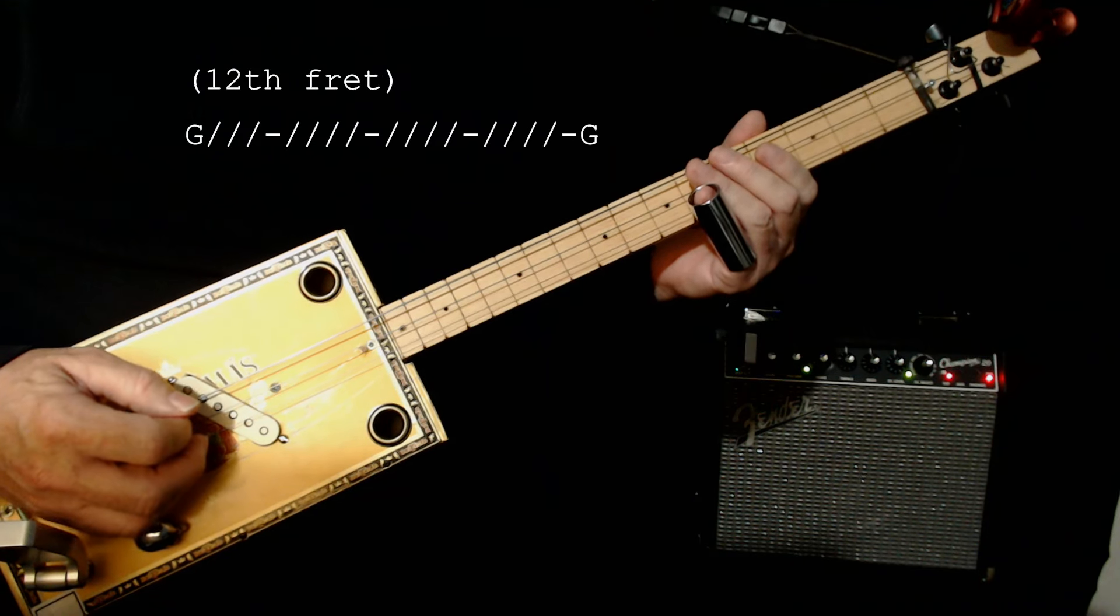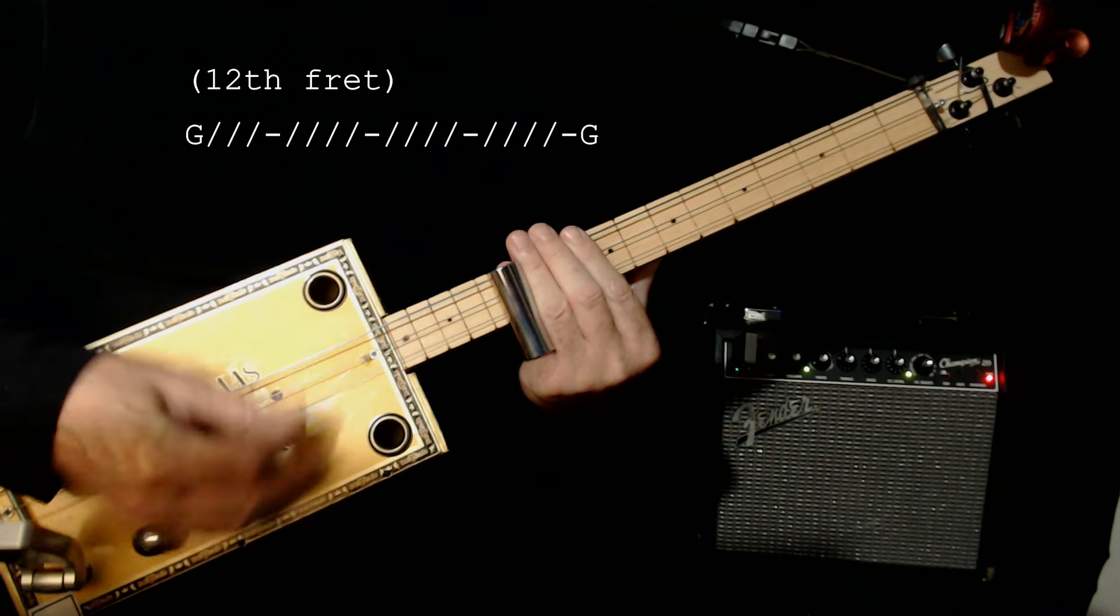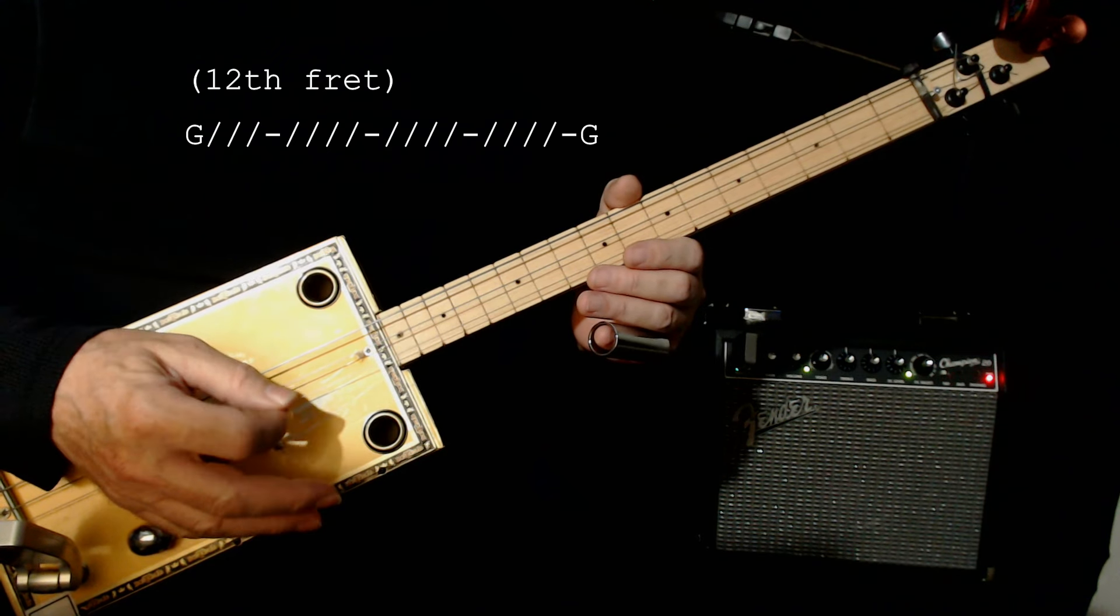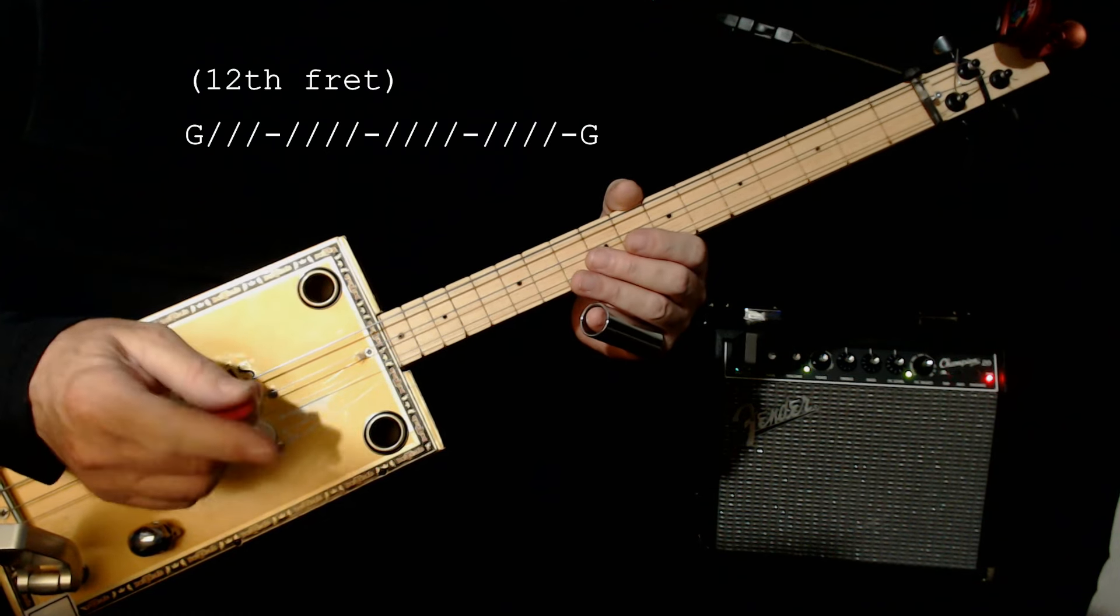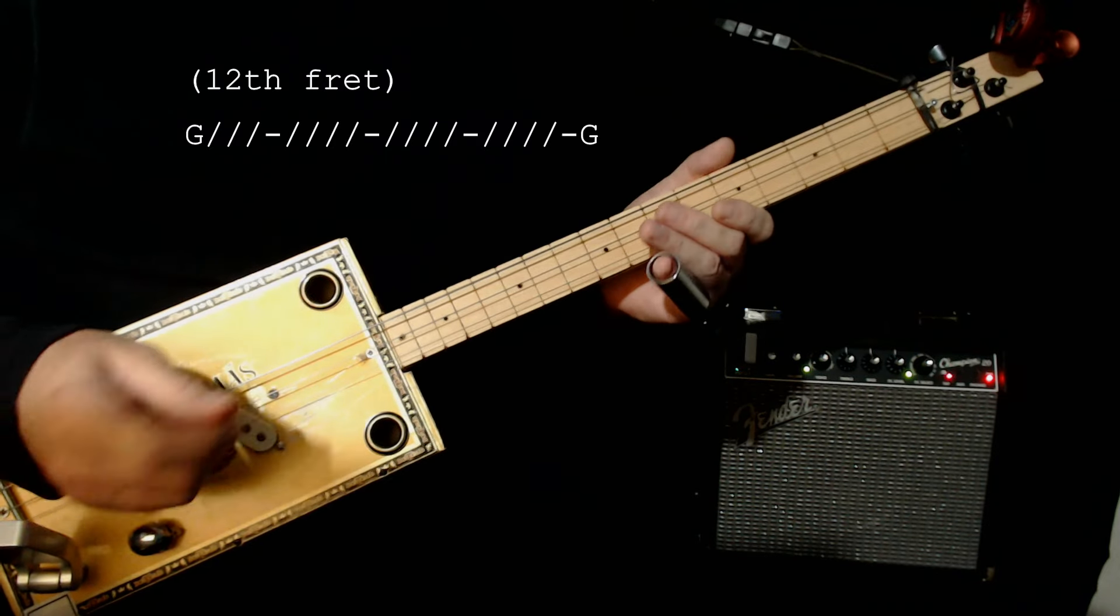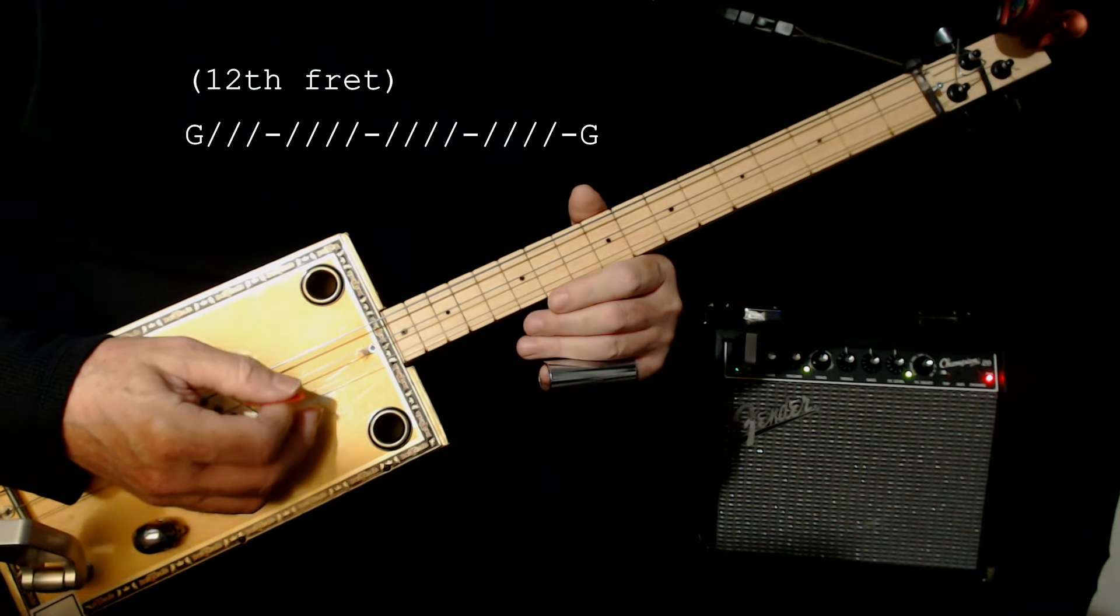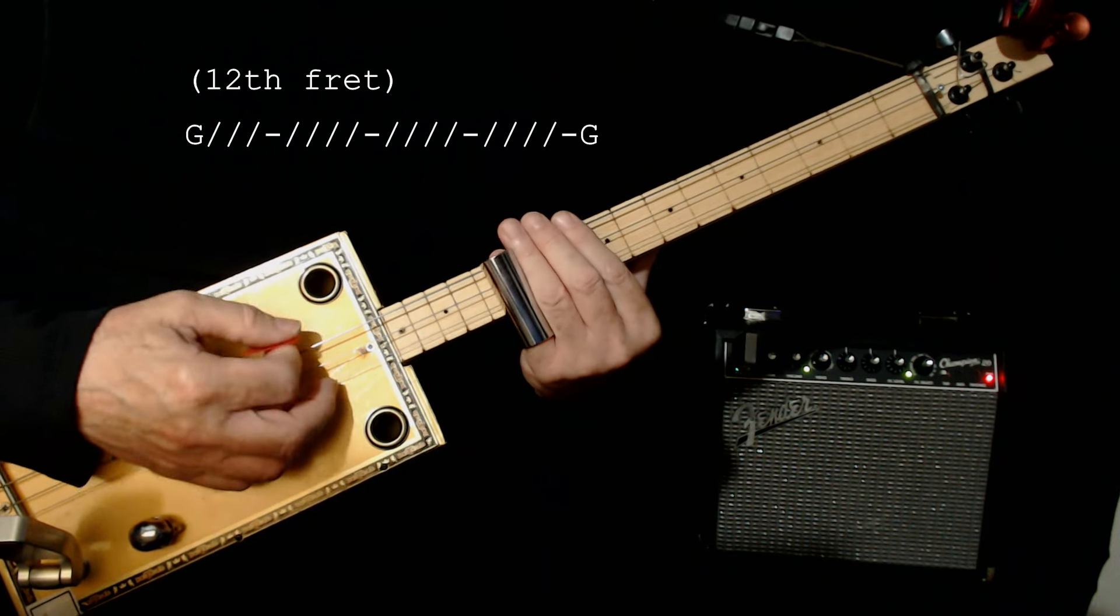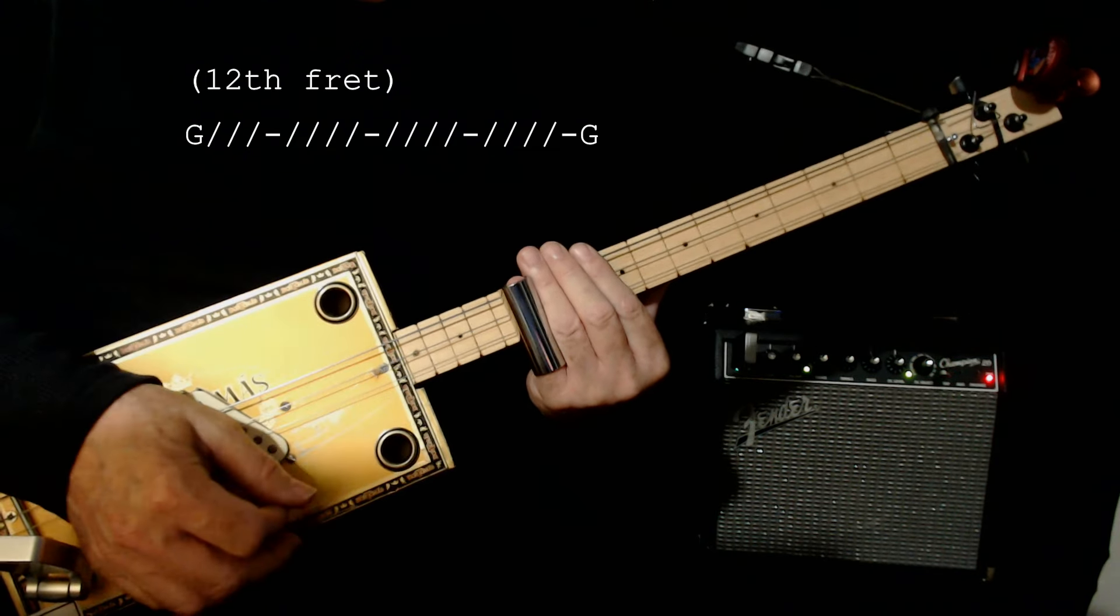And then to end the intro of the song, he goes up to the twelfth fret, and he plays that in sixteenth notes, so it's four sets of four notes, which is pretty tough to count. The proper way to count it is one-E-and-a, two-E-and-a, three-E-and-a, four-E-and-a, and so on.